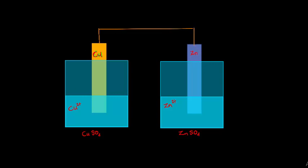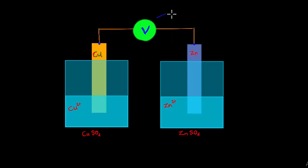We also have a voltmeter connected. This voltmeter reads the difference in joules per coulomb — energy per coulomb of electrons — between the two points. Our question is: what would this reading be? Well, at this point the reading would be zero. There would be no reading.